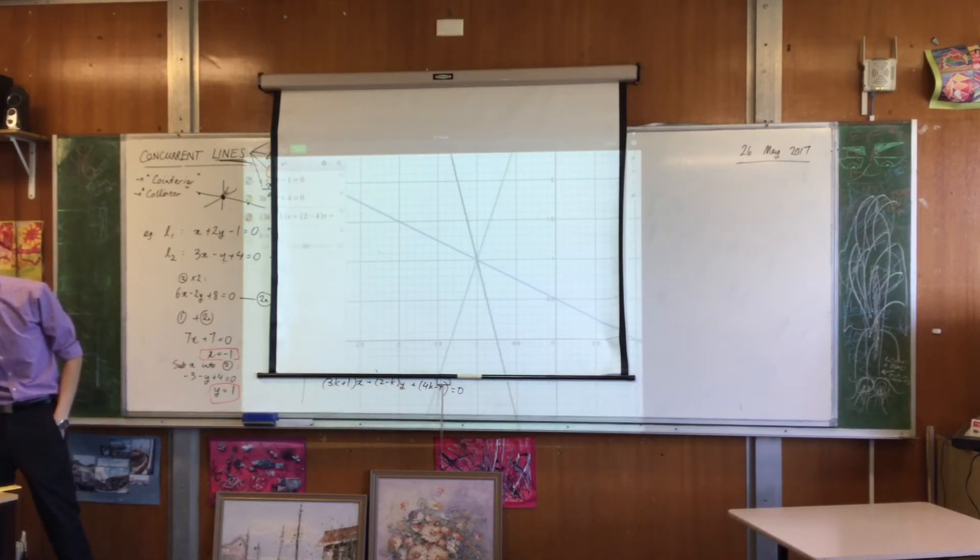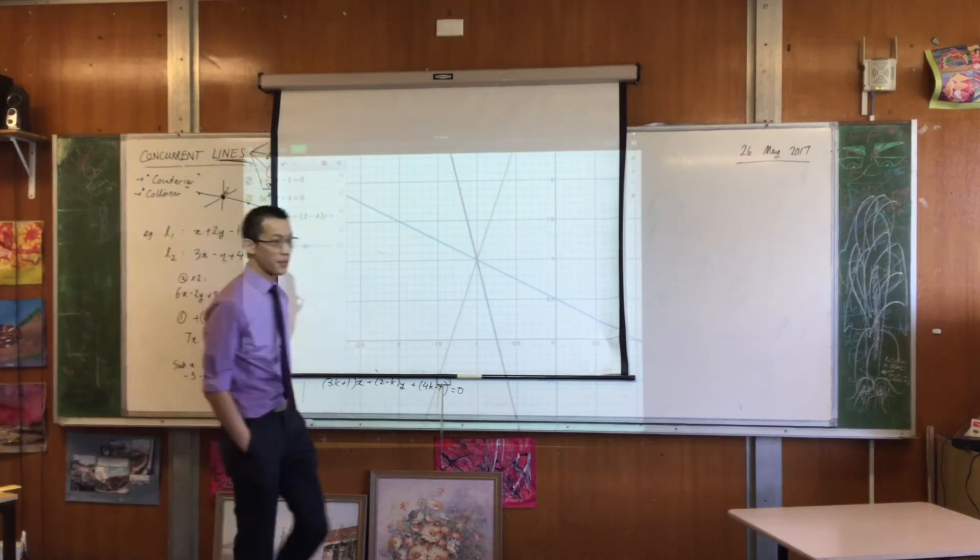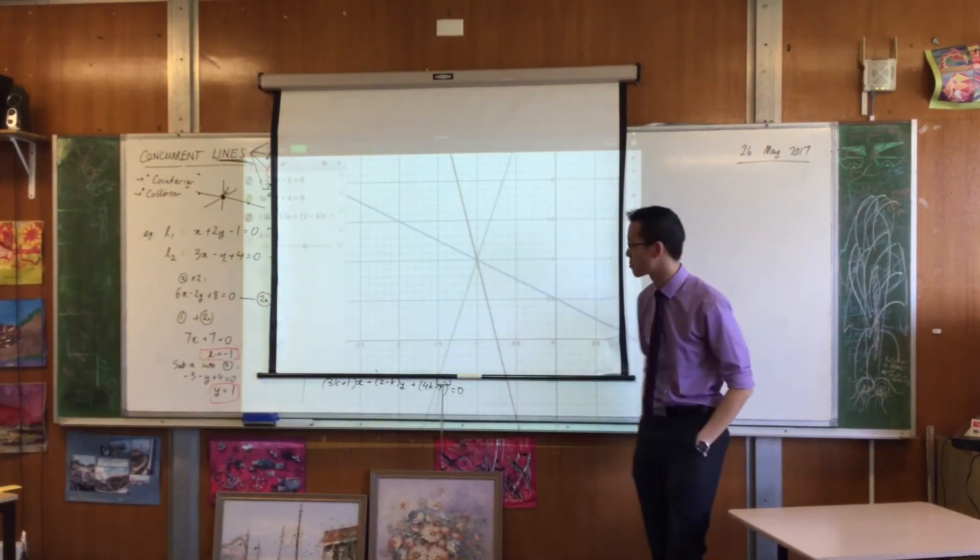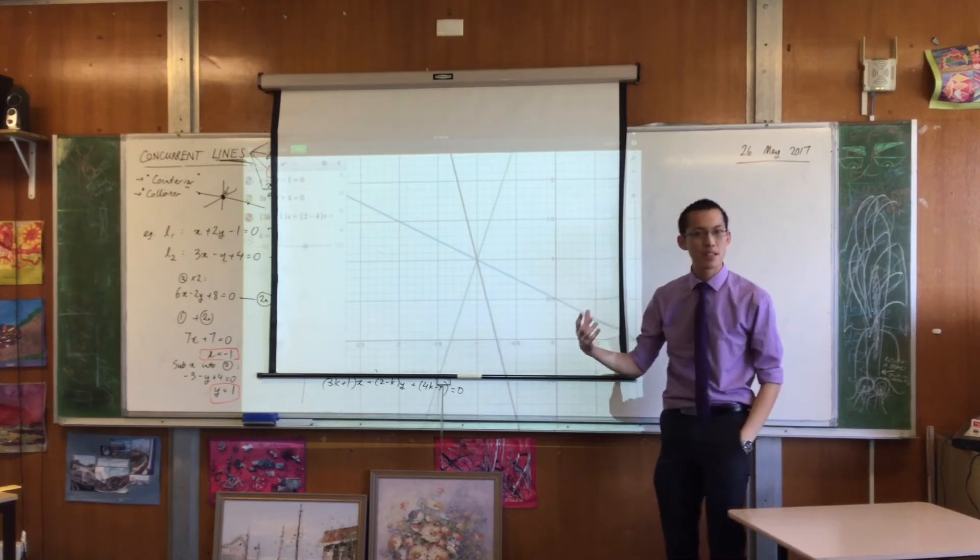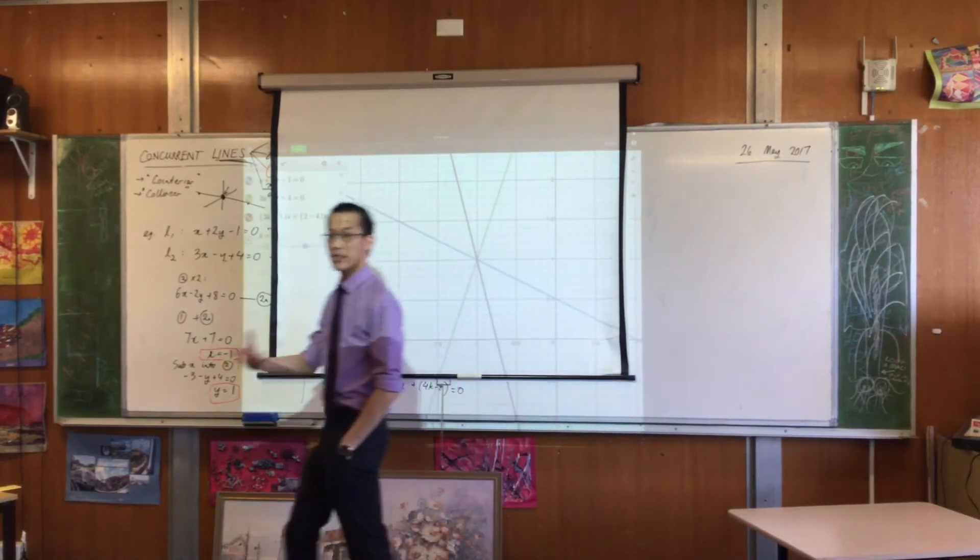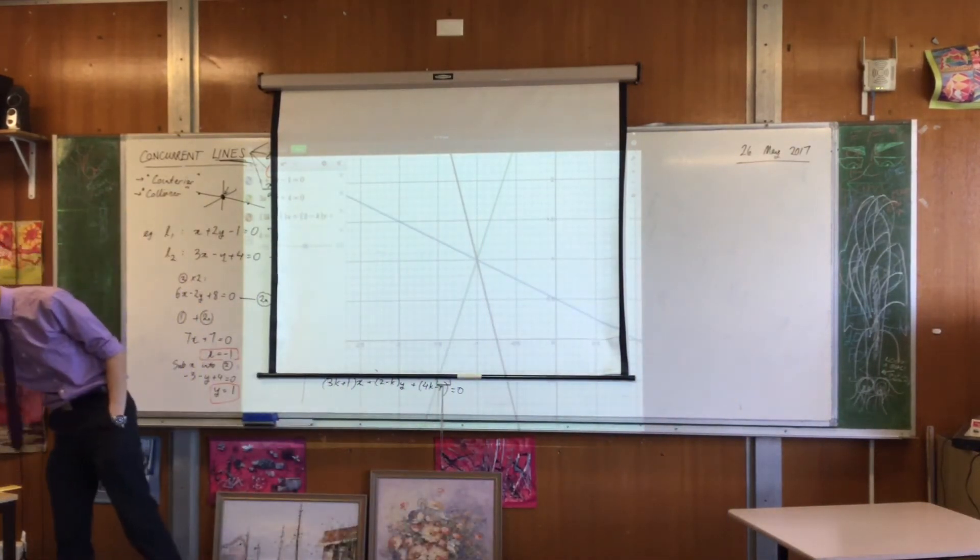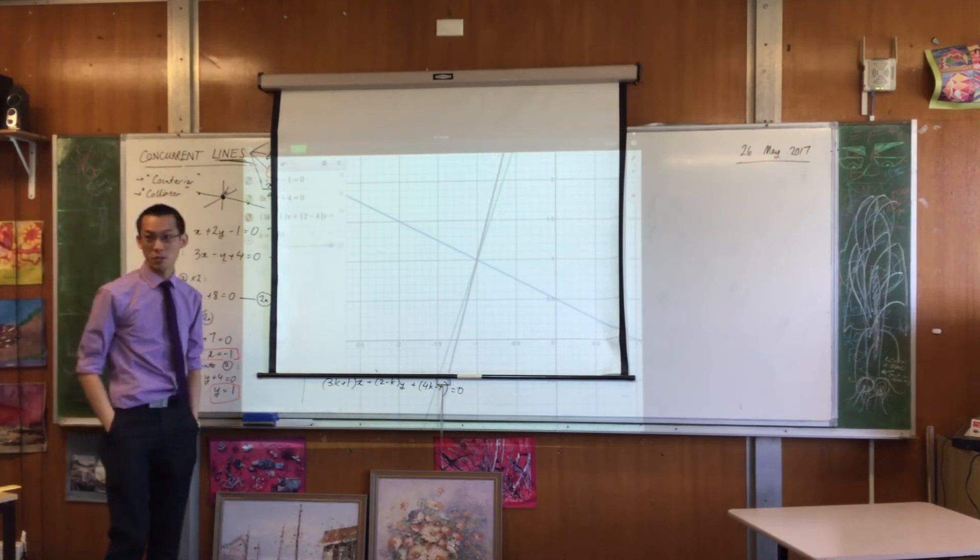So I'm going to add that slider in. Okay. So the first good sign is, fantastic, it's concurrent with the others. Right? But now what happens is I vary k because k is the thing that I can change. Well, looks like we did it right. Okay?